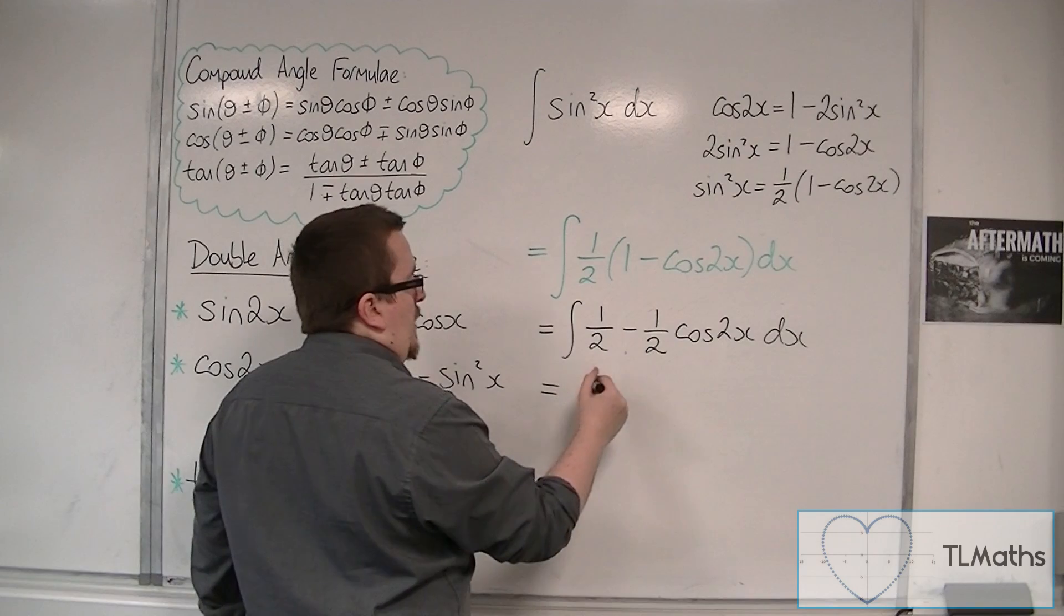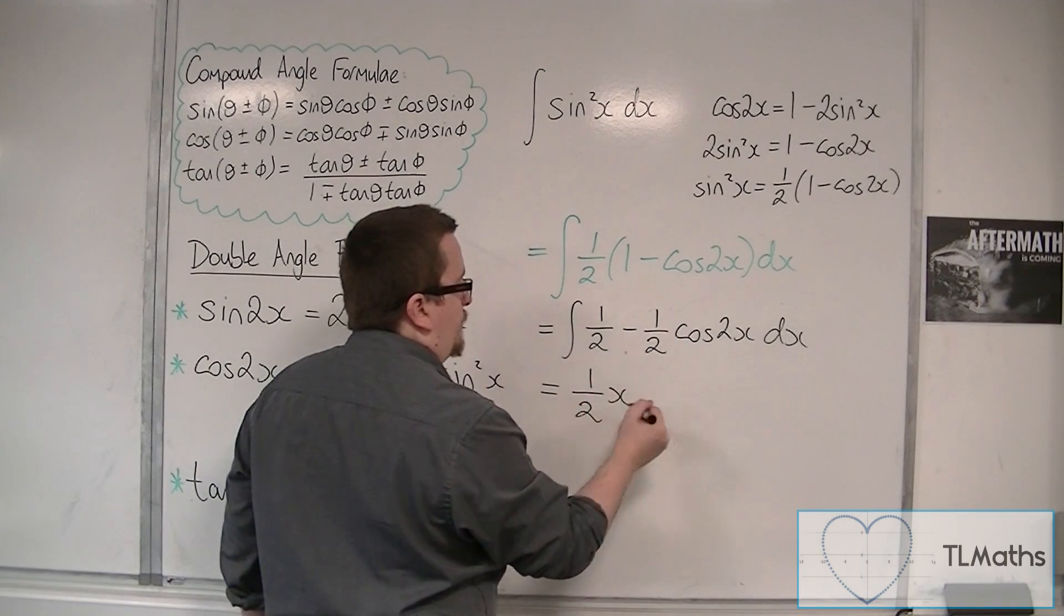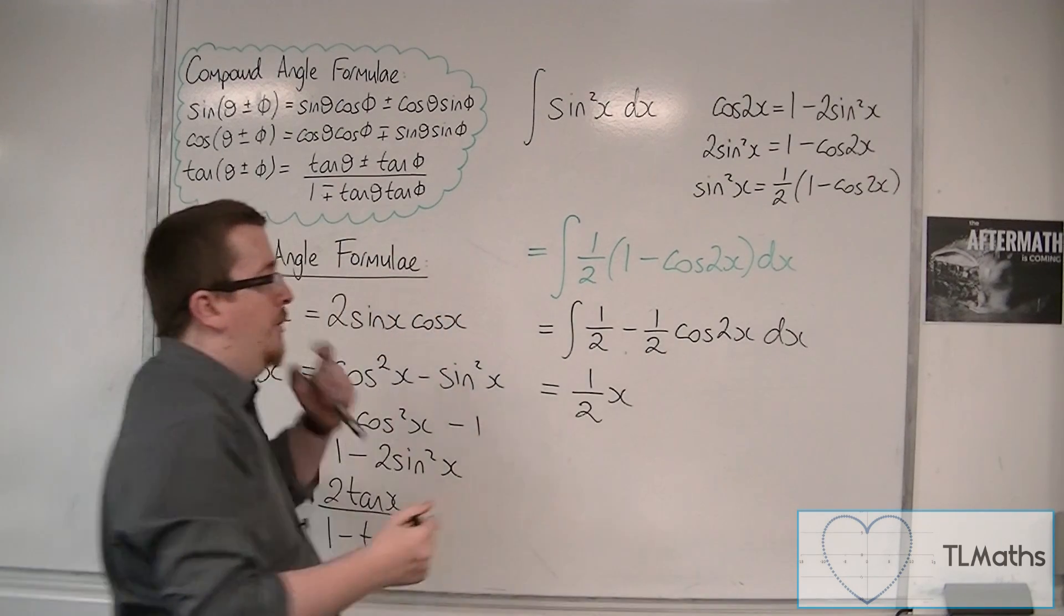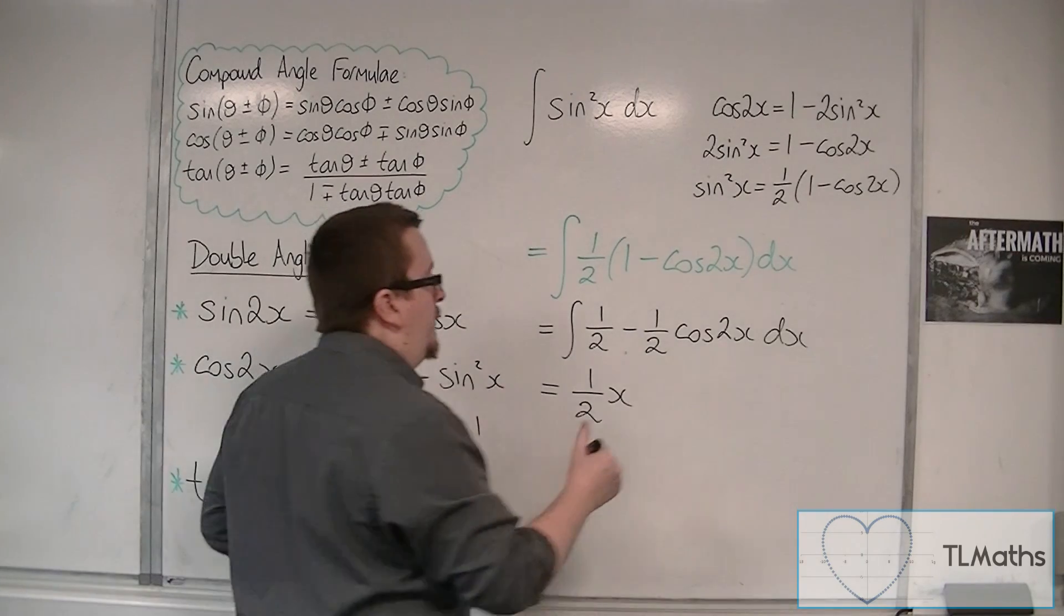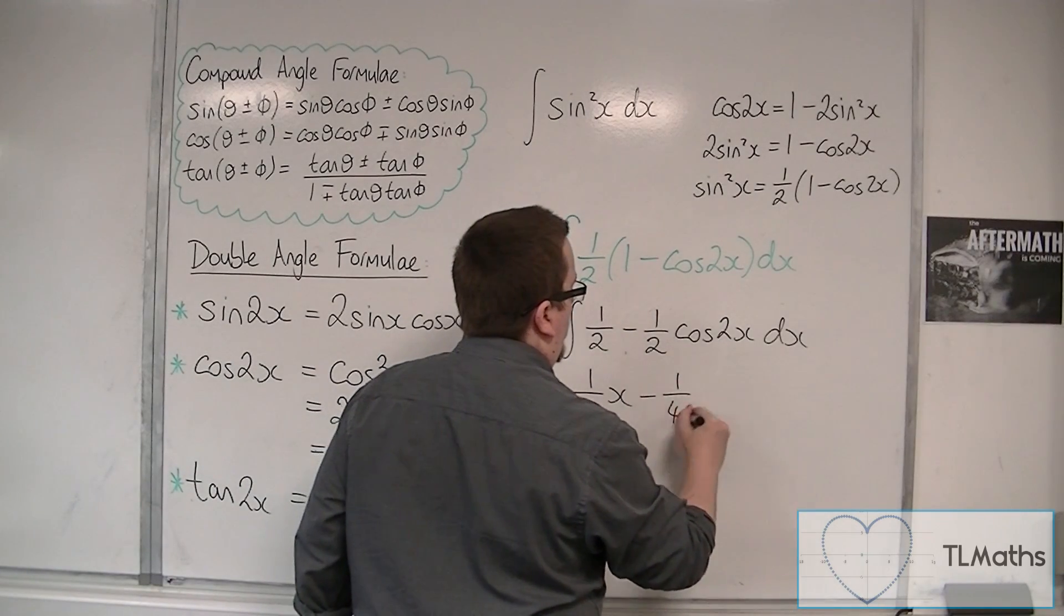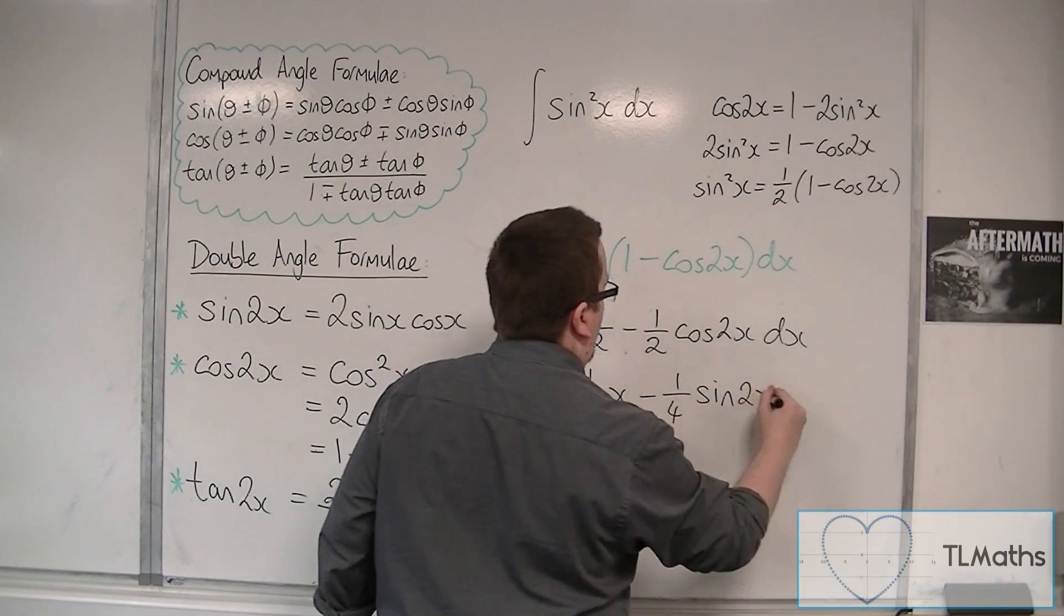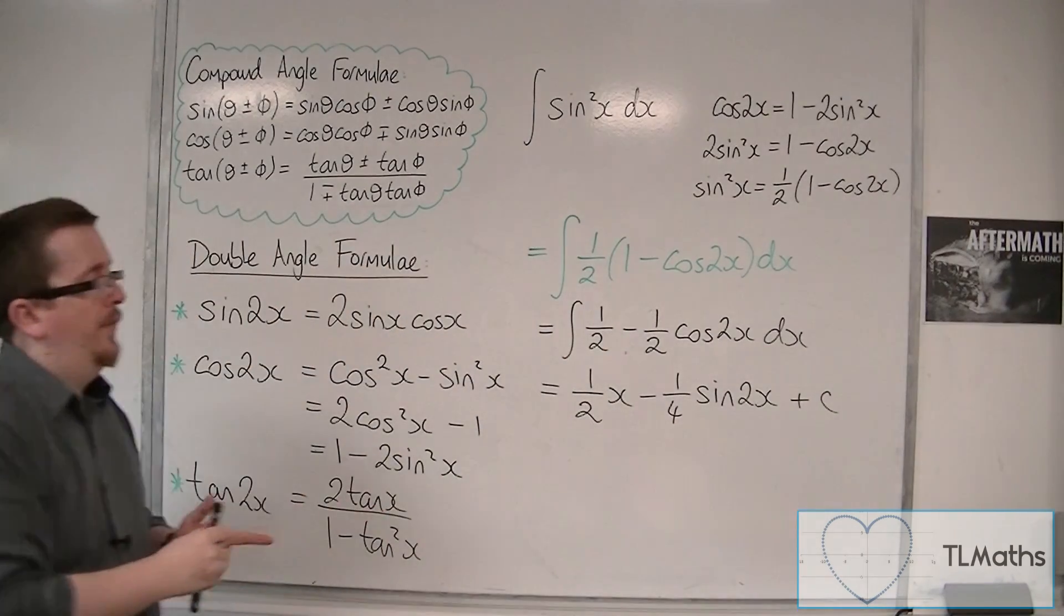Let's integrate. So 1 half integrates to 1 half x. And minus 1 half cos 2x integrates to minus 1 quarter sine 2x. And we've got the constant of integration plus c.